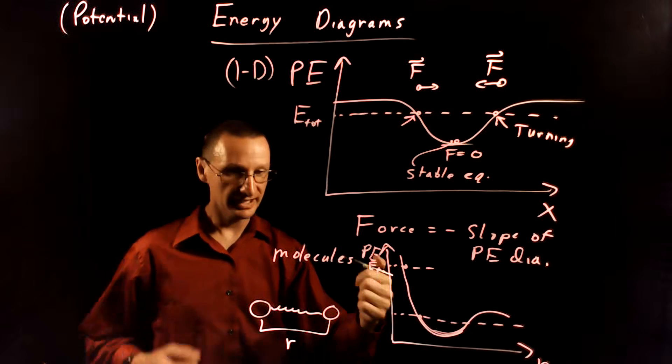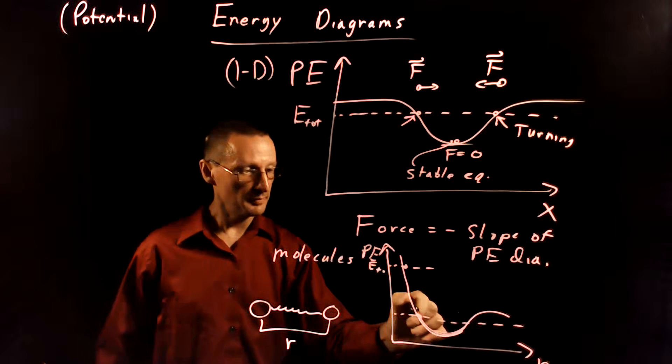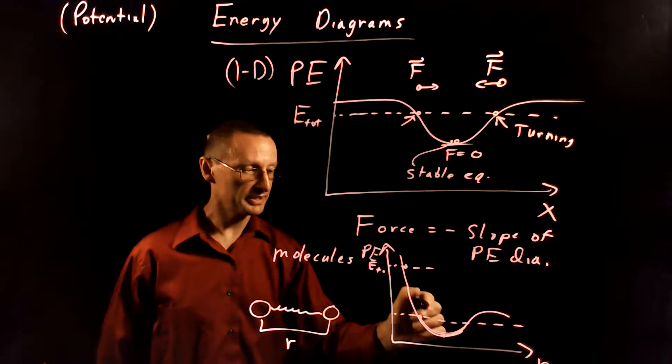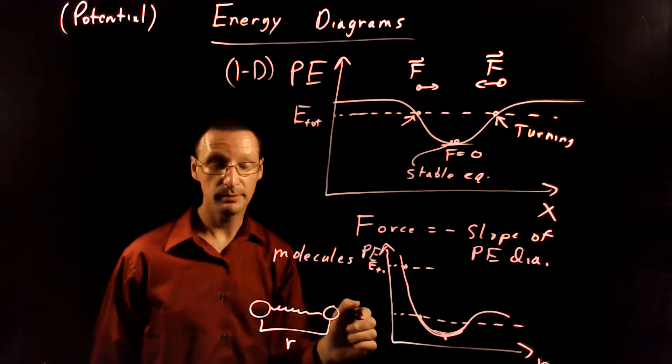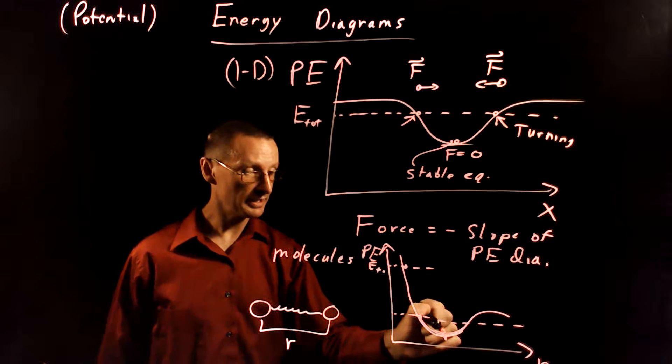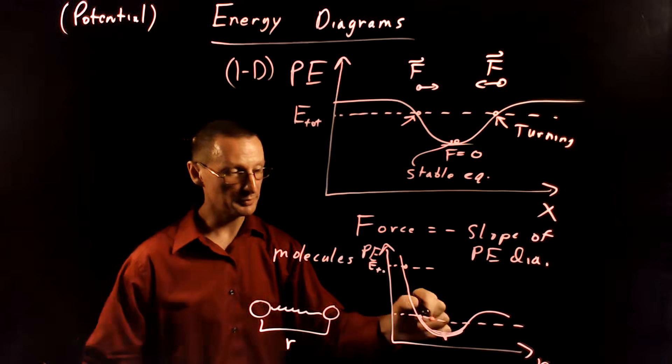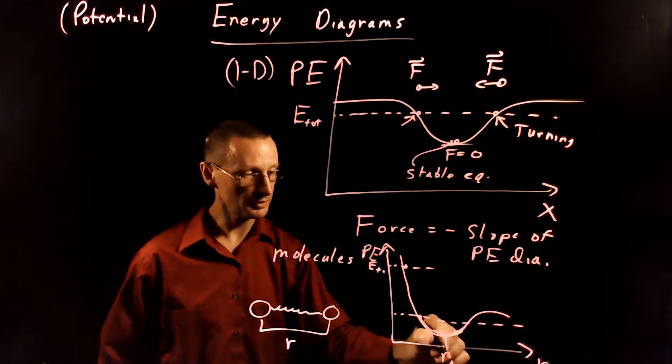So that what will happen is if you put it here, it will oscillate back and forth in between these two points, and eventually it may settle down into a stable point here. So if you initially put them with this separation here, I'm going to call that R0,